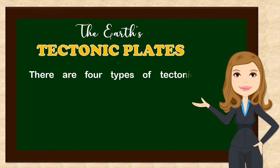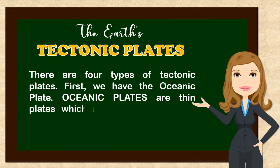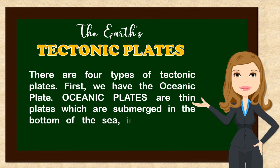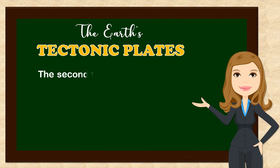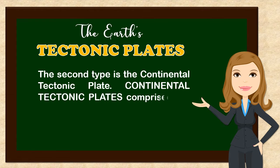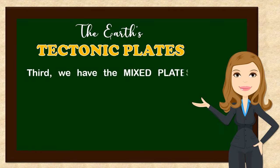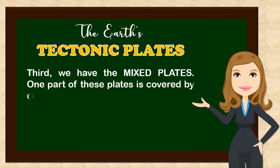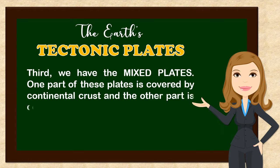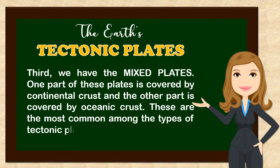There are four types of tectonic plates. First, we have the oceanic plate. Oceanic plates are thin plates which are submerged in the bottom of the sea in the oceanic crust. The second type is the continental tectonic plate. Continental tectonic plates comprise the continents and are lighter than the oceanic ones. Third, we have the mixed plates. One part of these plates is covered by continental crust and the other part is covered by oceanic crust. These are the most common among the types of tectonic plates.